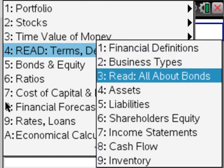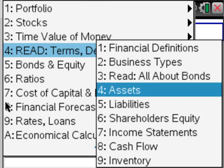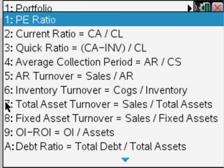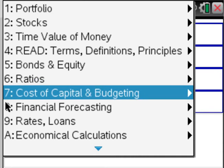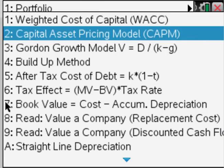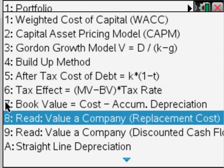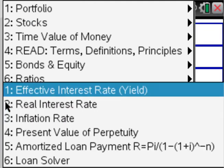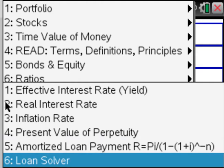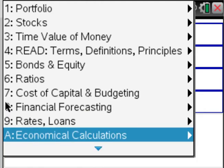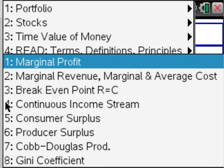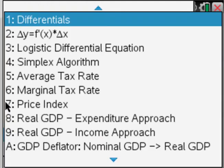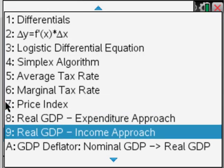Let's continue. This menu option allows you to read definitions of terms used in portfolio stocks and finances: bonds, equity ratios. There's tons of ratios here that can be computed. Cost of capital, capital asset pricing model, straight line depreciation, financial forecasting, rates and loans. The loan solver is very handy. Inflation rates, economical calculations, marginal profit, break-even point, surplus, more economical tax rates, GDP, etc.